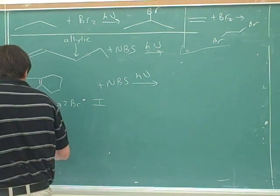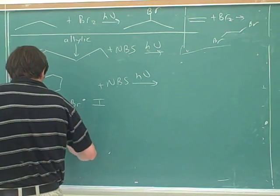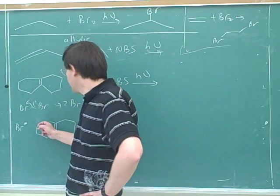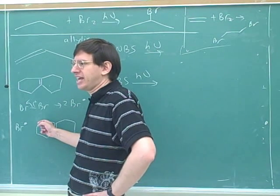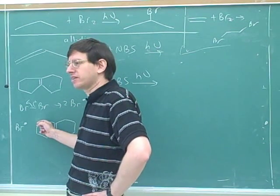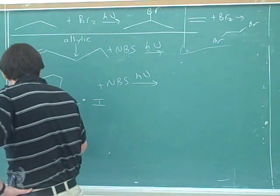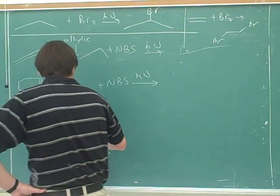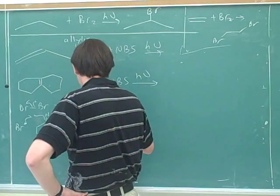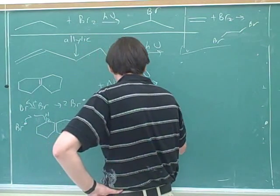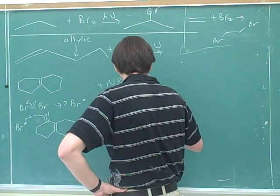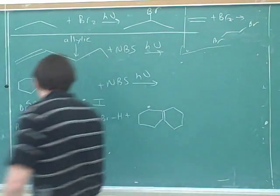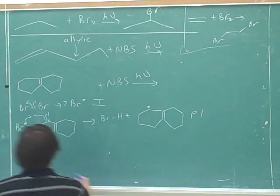And the Br radical — now what's the Br radical going to do? It's going to take a hydrogen. And you guys saw that it wants to take an allylic hydrogen. It doesn't really matter which allylic hydrogen it takes. They're all really symmetrical with each other, so we can take any of the allylic hydrogens. That'll give us this. That's propagation step one.